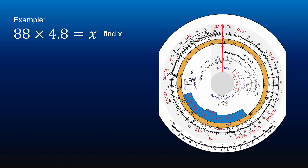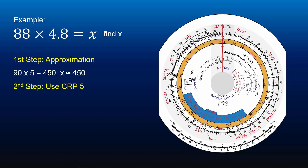To further understand multiplication, let's look at an example: 88 times 4.8 equals X — find X. The first step is to approximate the answer: 90 times 5 equals 450, thus X is approximately 450. The second step is to plug in the variables into CRP5 to find the answer. We rewrite the problem as 88 over 1 equals X over 4.8. The arrangement of the variables should look like this.